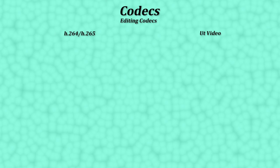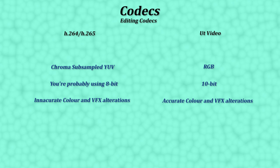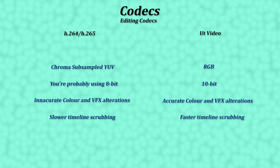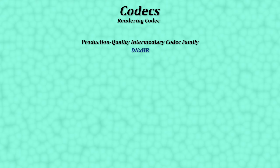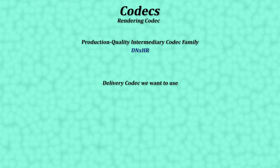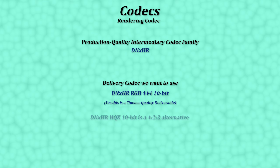Because we've chosen the UT Video encoder and the RGB color format, we are still able to make accurate color, VFX, and temporal corrections while also being smoother and faster to edit. In other words, we're sacrificing hard drive space for everything else. For the final output, we're going to be using the DNxHR RGB 4:4:4 codec. Remember the intermediary codecs that Hollywood productions transcode into for editing? ProRes and DNxHR are the two primary formats they use, with DNxHR RGB 4:4:4 10-bit being one of the codecs we want to use as the final output.